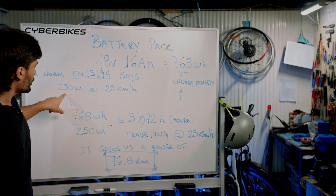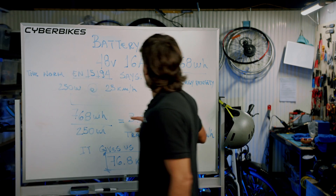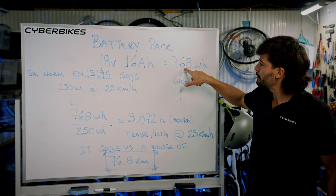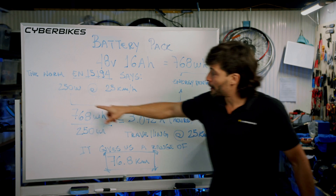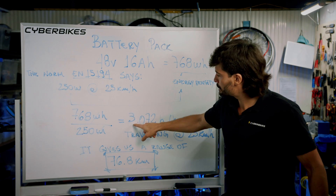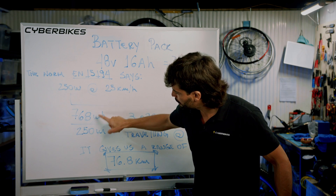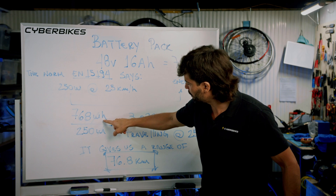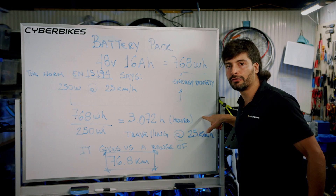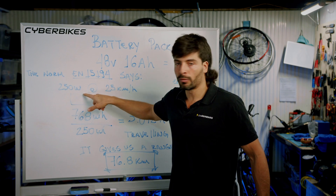So what we do is take the energy density of our battery pack — 768 watt-hours — and divide it by 250 watts. The watts cancel out, and we're left with hours: 3.072 hours of use of this battery pack at 250 watts consumption.